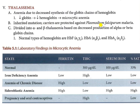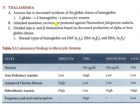Carriers are protected against falciparum malaria. Because the RBC's lifespan is decreased, they are destroyed quickly. Malaria's cycle takes many days to complete, so if the RBC lifespan is decreased, the malaria parasite cannot replicate. This is why carriers are protected.